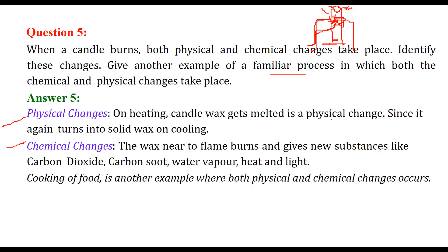Physical change: on heating, the candle wax melts - this is physical because when it cools it will again become wax by itself, so it is reversible. Chemical change: the wax near the flame burns and gives new substances like carbon dioxide, carbon soot, water vapor, heat, and light. This is a chemical change because it is irreversible.